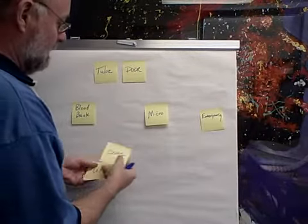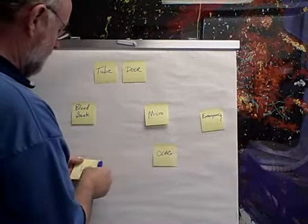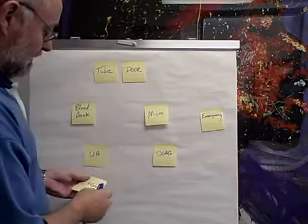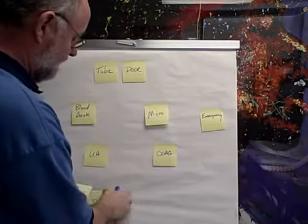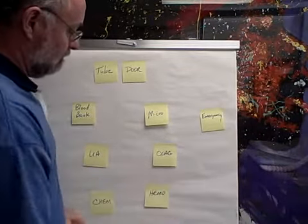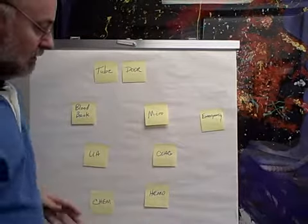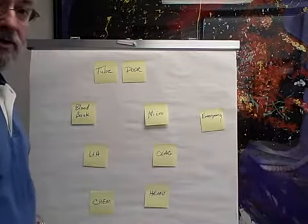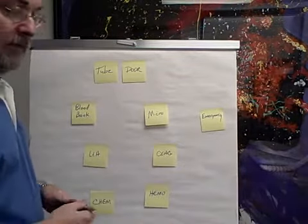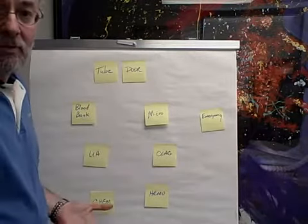They had coagulation and urinary analysis, and then they had chemistry and hematology down here. So this was the physical layout of this 2,400 square foot area. And then you start drawing where does the stuff travel to.